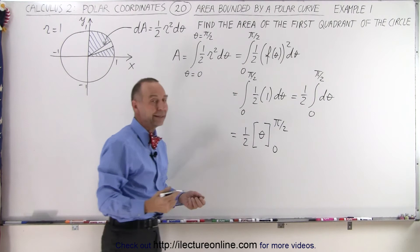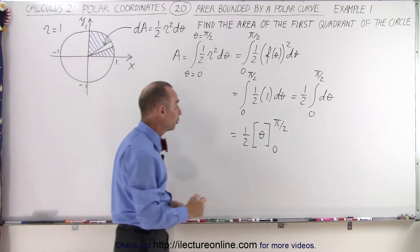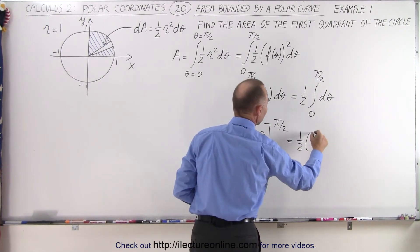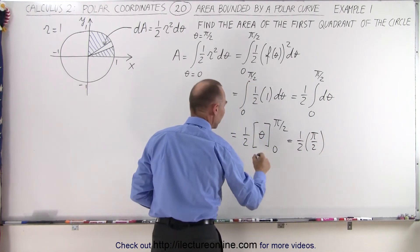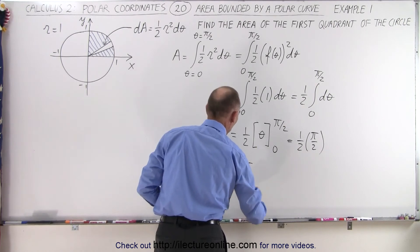When we plug in the lower limit, we get nothing. Plug in the upper limit, we get π/2. So this becomes one-half times π/2, which is π/4.